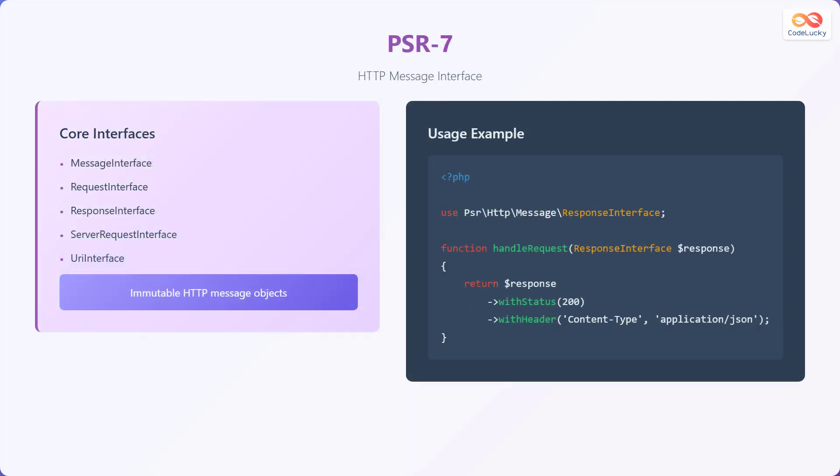Let's explore PSR7, which defines the HTTP message interface. This standard specifies a set of core interfaces, including MessageInterface, RequestInterface, ResponseInterface, ServerRequestInterface, and UriInterface. These interfaces facilitate the creation of immutable HTTP message objects. An example of usage is shown using the ResponseInterface to set the status and header.